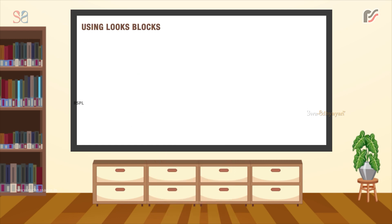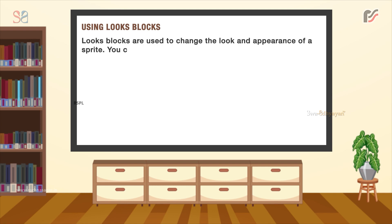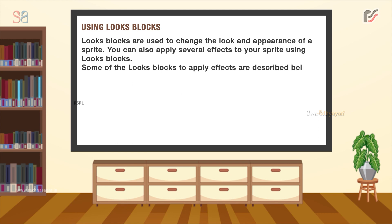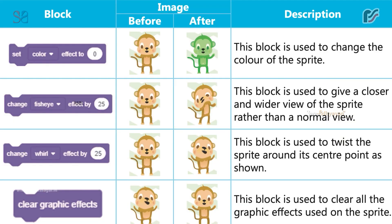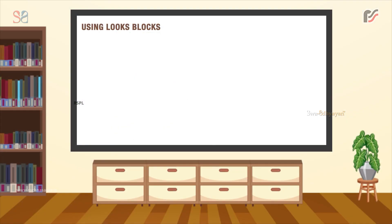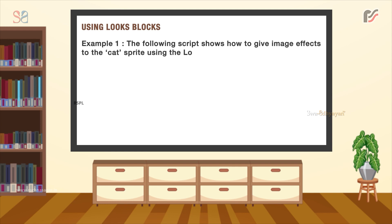Next is using Looks blocks. Looks blocks are used to change the look and appearance of a sprite. You can also apply several effects to your sprite using Looks blocks. Some of the Looks blocks to apply effects are described below. One block is used to change the color of the sprite. Another gives a closer and wider view of the sprite rather than a normal view. Another block is used to twist the sprite around its center point. And one block is used to clear all the graphic effects used on the sprite.